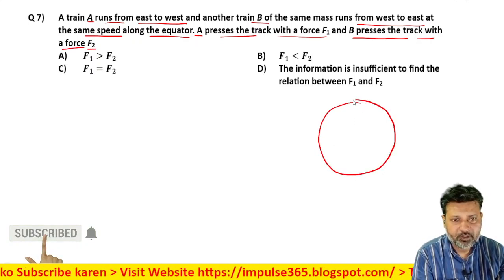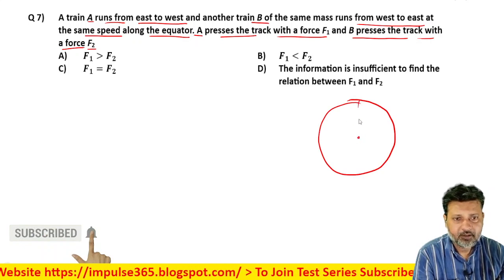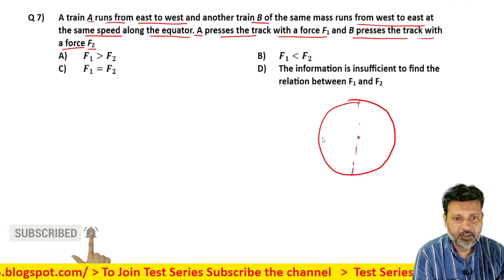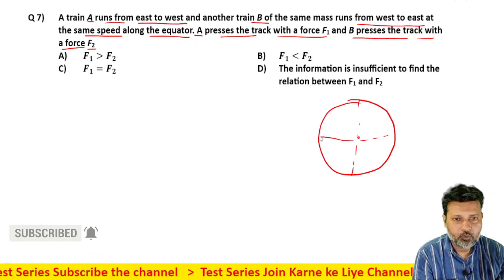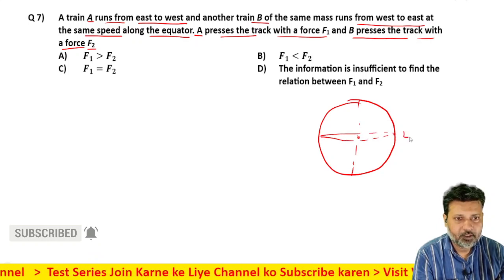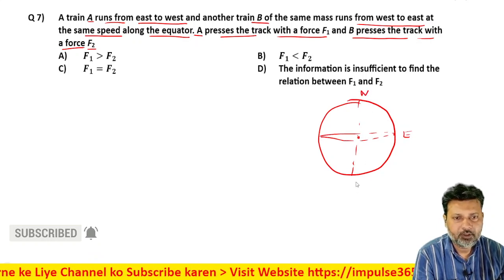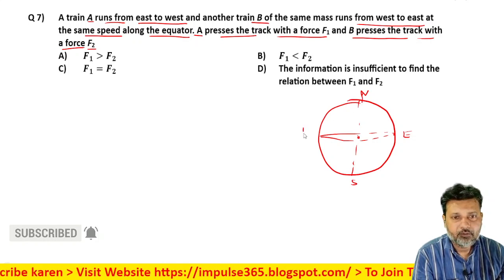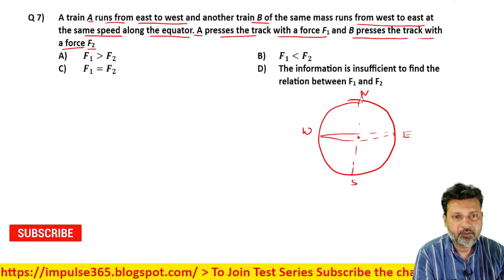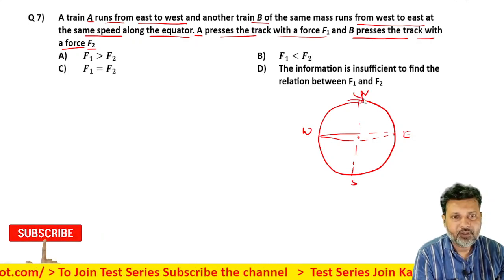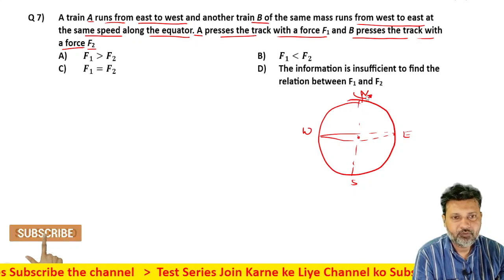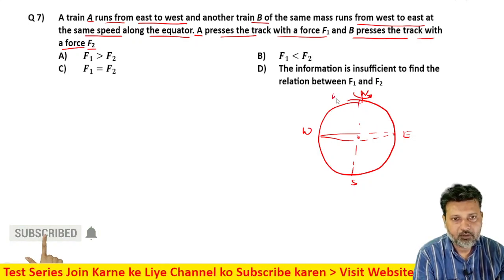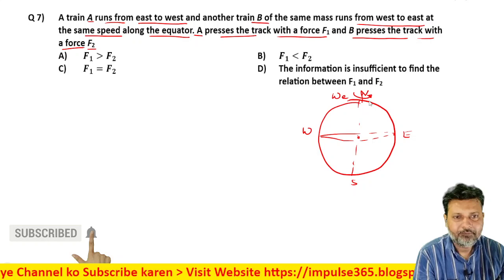Let's visualize this situation. This is the pole, this is the equator, this is the south pole. This is west, this is east. The Earth is rotating from west to east. Let its angular velocity be omega_e.